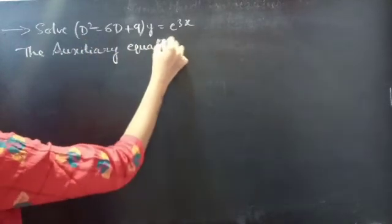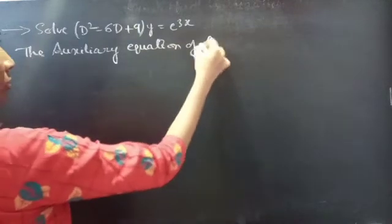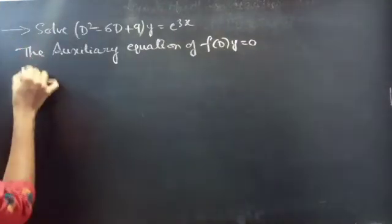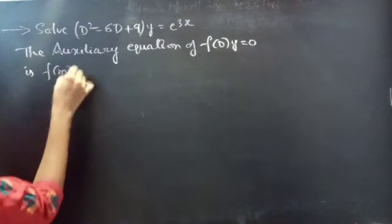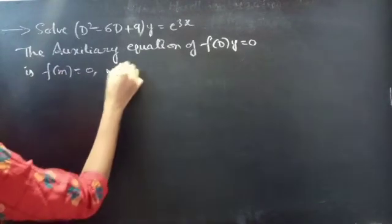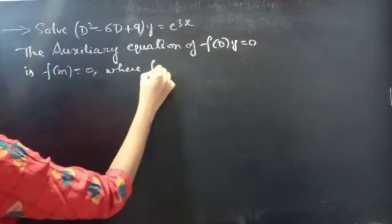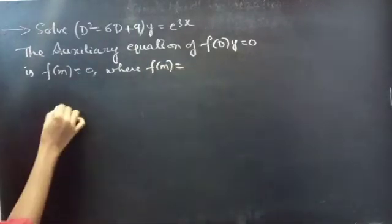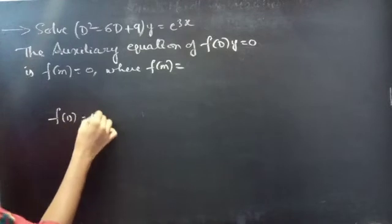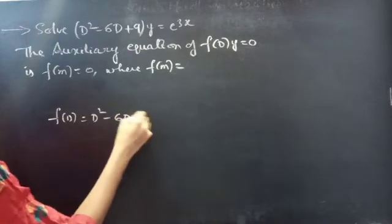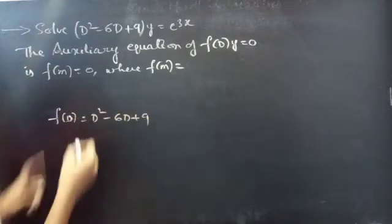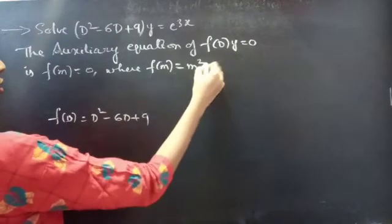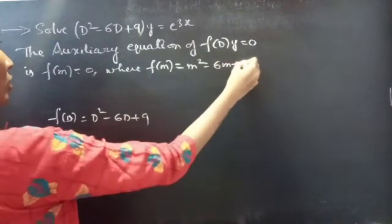Firstly, we will find the complementary function using the auxiliary equation of the homogeneous equation. The auxiliary equation of f(D)·y = 0 is f(m) = 0, where f(D) = D² - 6D + 9. Replace the differential operator D by m, then you will get f(m) = m² - 6m + 9.